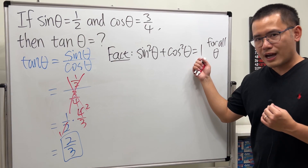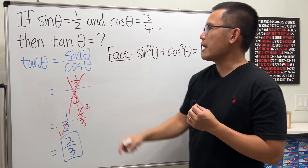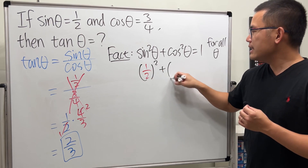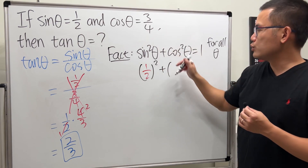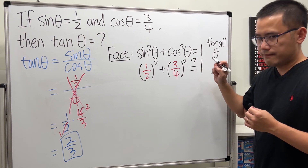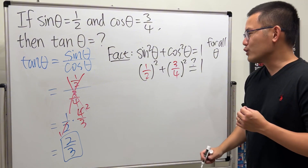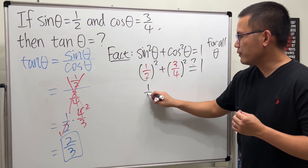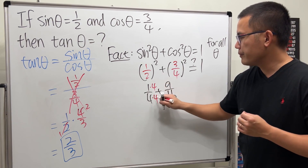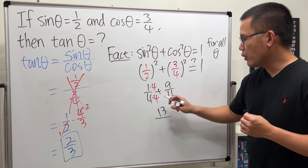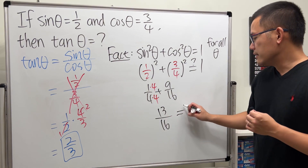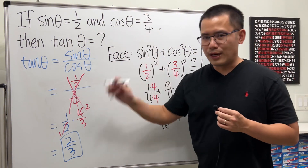We must follow this all the time. If I put 1/2 for sin θ, then we have to check: (1/2)² plus (3/4)² — do we end up with 1? No. Unfortunately not, because (1/2)² is 1/4, and (3/4)² is 9/16. Getting the common denominator, that's 4 plus 9, which is 13, over 16. This is not equal to 1, so this is not okay.